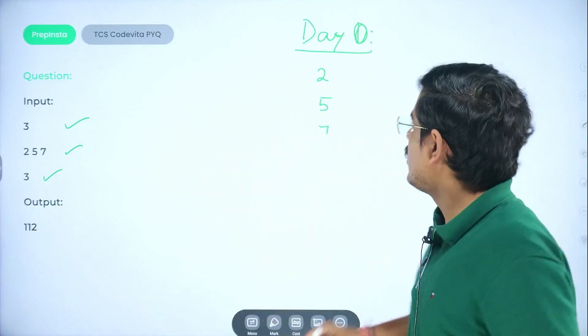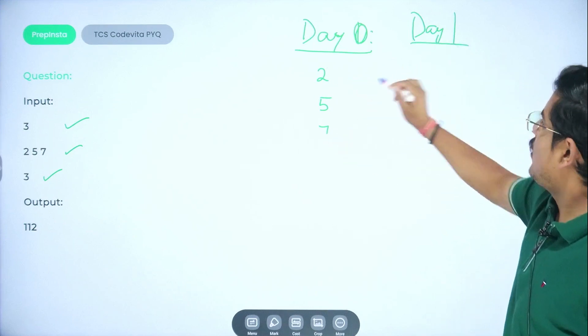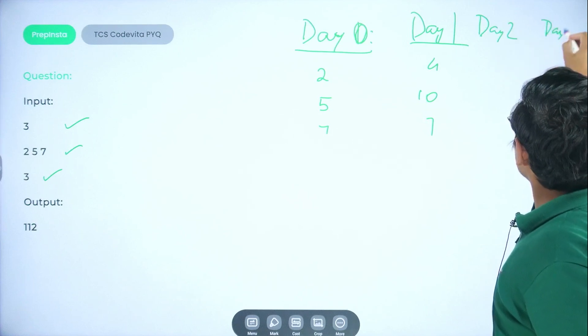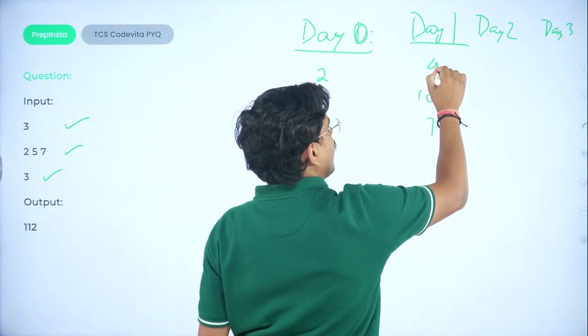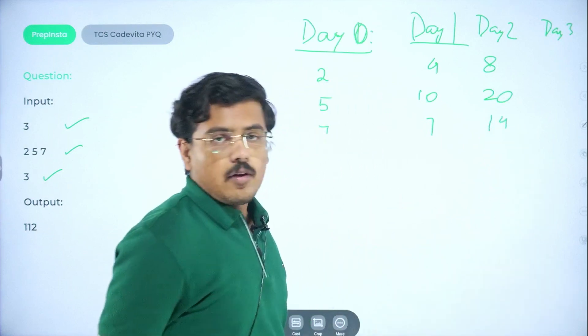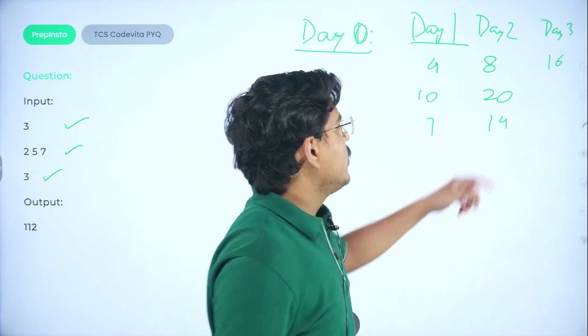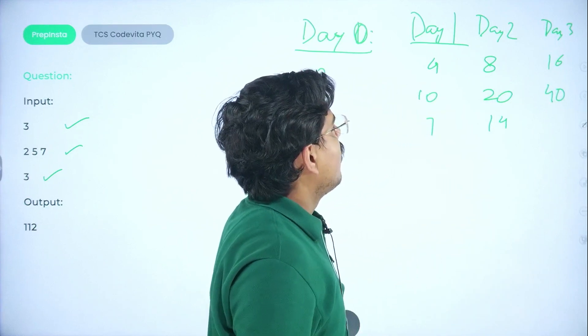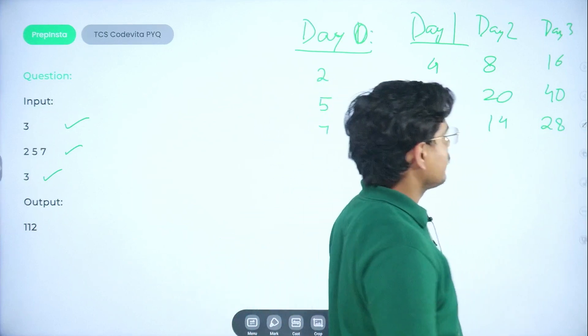Now, 3 days, the fairy is going to work. So day 1 comes. Then fairy works and it becomes double. So 4, 10, and 14. Then comes day 2 and then day 3. So on day 2, what does fairy do? Again, she works, flowers double. So this was 4, then here they become 8, here they become 20, here they become 28. Again, when you go ahead, they double up. So this would become 16, this would become 40, and 14 would become 28, correct? So this would become 56.